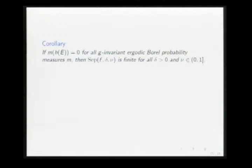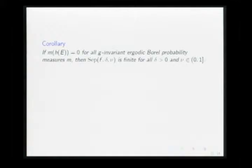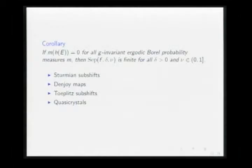A corollary follows: assume you take the set where the fibers are big and project it down to the space where the isometry lives, and assume this projection has measure zero with respect to all invariant measures of the isometry G. Then the separating points are finite. This condition is satisfied in Sturmian subshifts, Denjoy maps, Toeplitz subshifts, and also in quasicrystals. This theorem allows you to find a rich class of systems where you can actually study this notion.